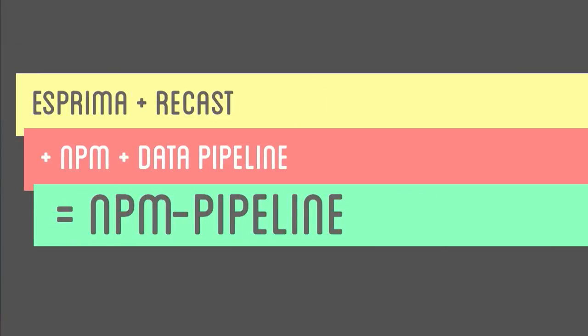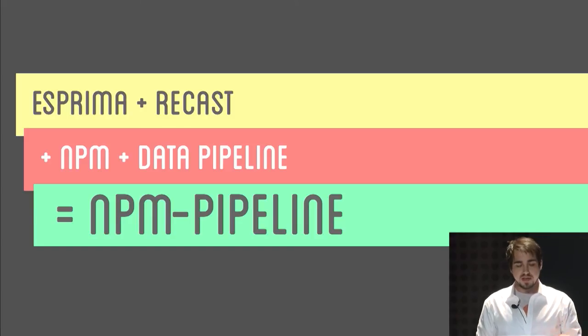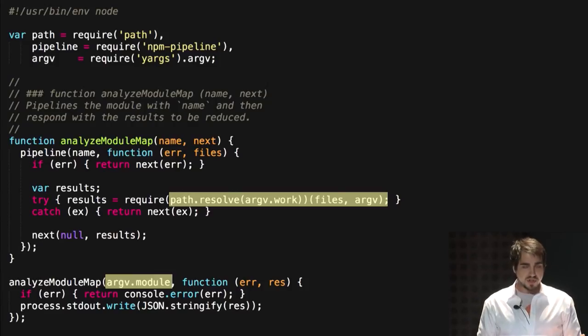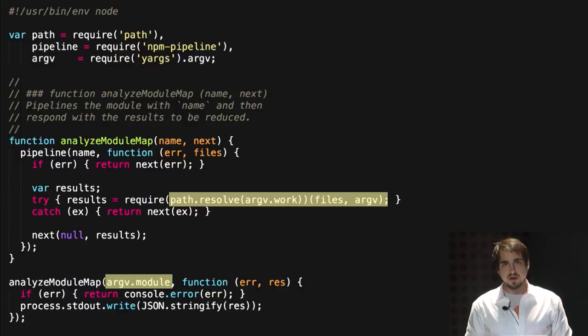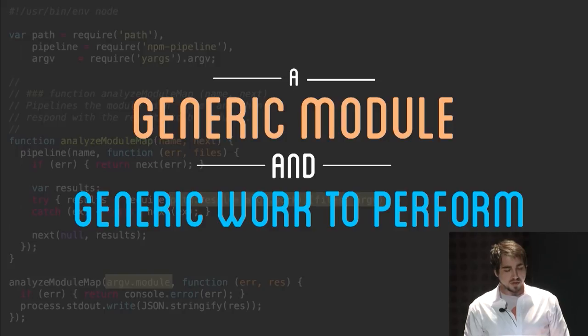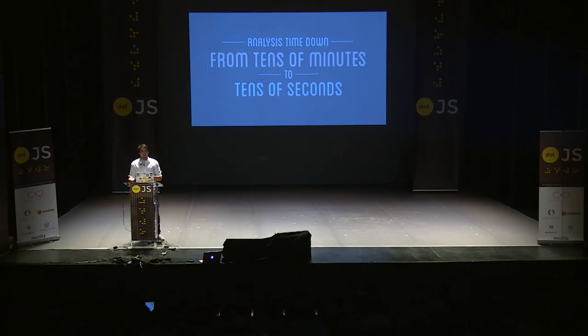Using something like Esprima or Recast, we can actually go out, get these things, get the NPM packages, and download them. This particular module will go out, get something for you, allow you to perform some sort of generic work on it, and then return it. This is an extremely simple binary script that takes two command line arguments — the module itself and the work script you want done — and outputs to standard out. You could spin up a hundred machines, run this on it extremely quickly, and get things done. This generic module got the analysis time down from tens of minutes to tens of seconds.